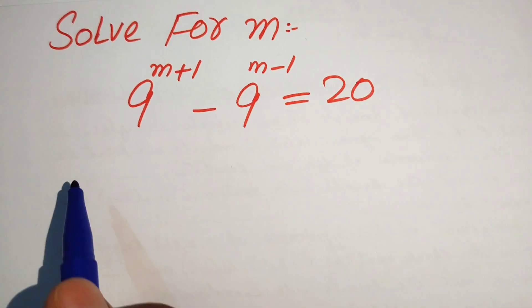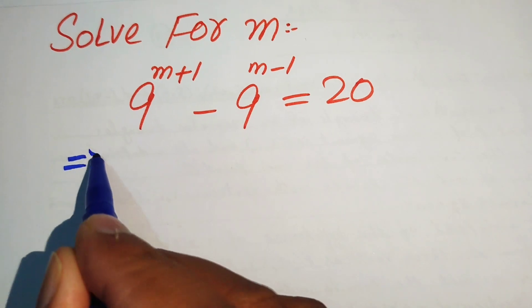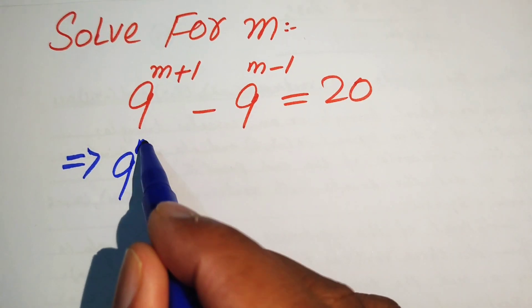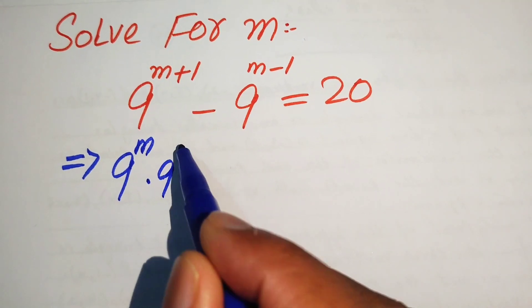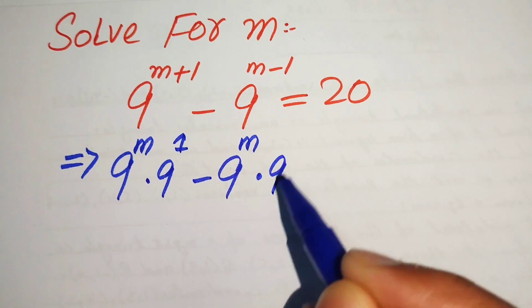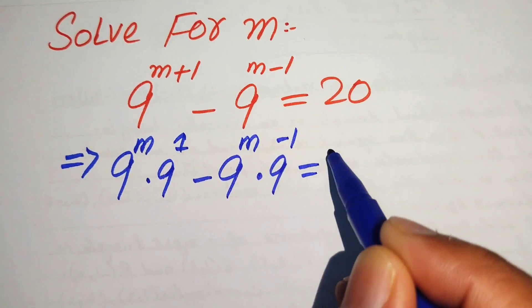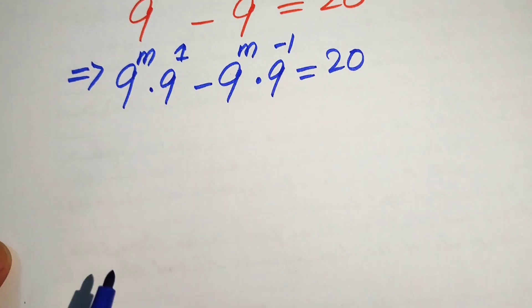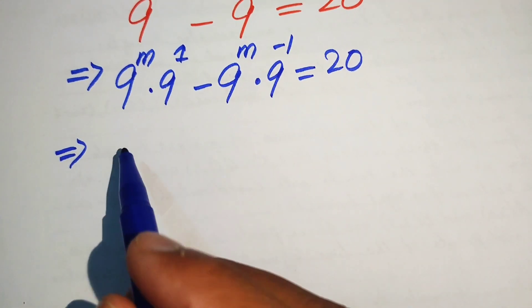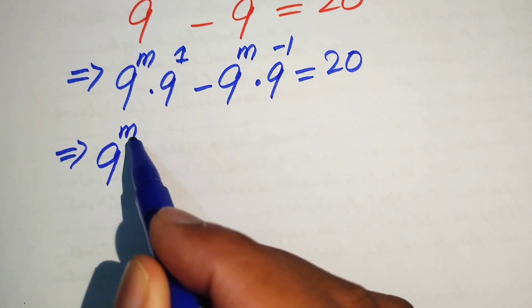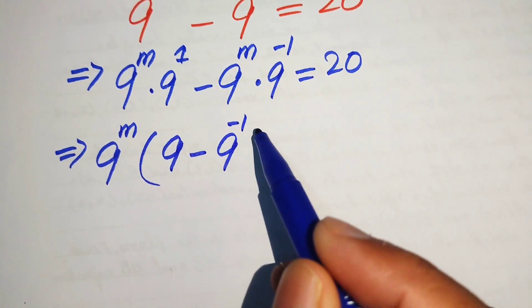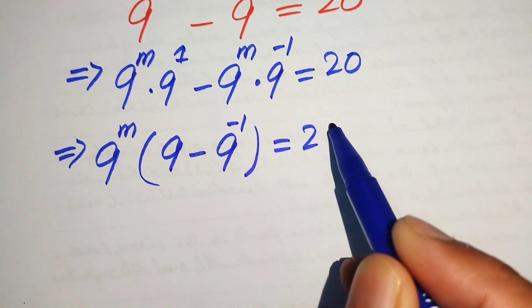The very first step is to break the exponents of both terms. It is written as 9 to the power of m into 9 to the power of 1, minus 9 to the power of m into 9 to the power of minus 1, equals 20. Then we take the common factor 9 to the power of m, and the remaining terms are 9 minus 9 inverse, equals 20.